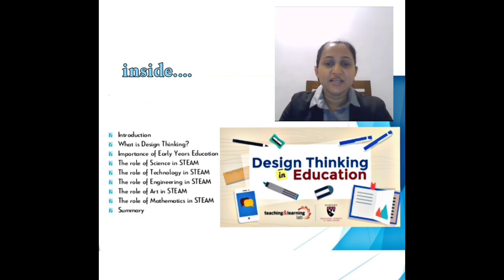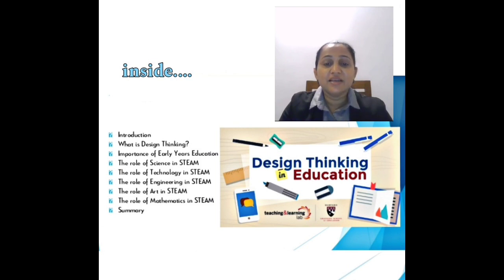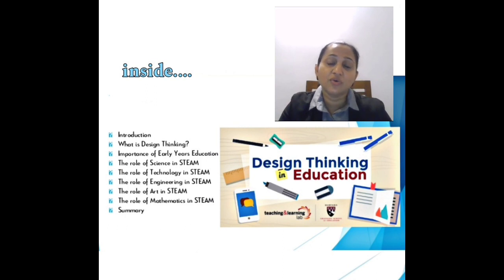The design thinking process generally consists of the following stages: Empathize, Define, Ideate, Prototype, Test and Iterate. Empathize means understanding the needs and perspectives of the people you are designing for. Define means clearly articulating the problem or challenge based on information gathered during the empathize stage. This involves synthesizing and analyzing the data to identify the core issues.